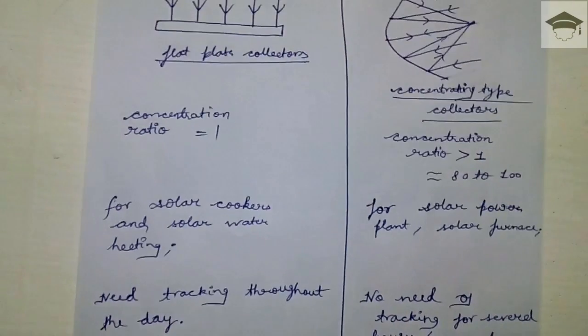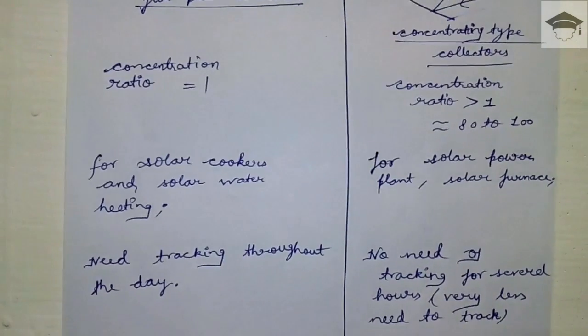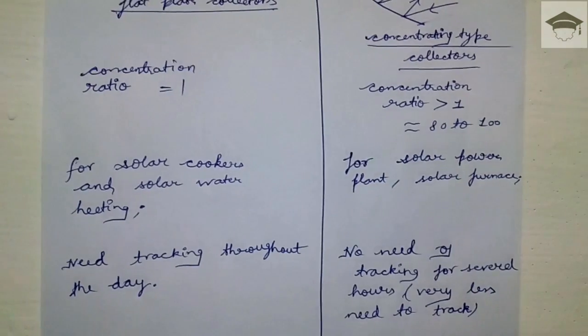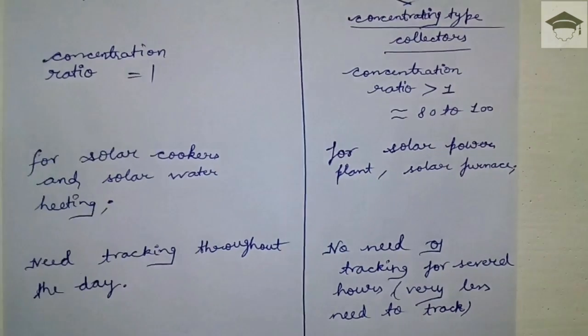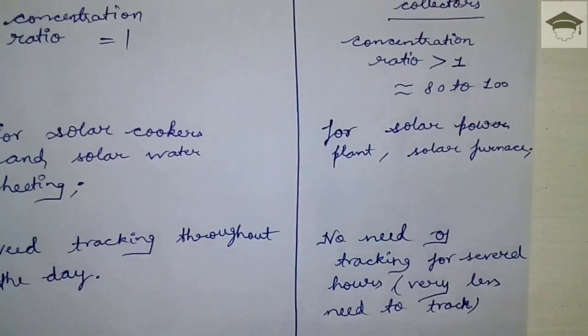Because the sun moves across the complete horizon, we have to direct the flat plate perpendicular to the direction of the sun's rays. Whereas in concentrating type collectors, it can be rotated about its axis.